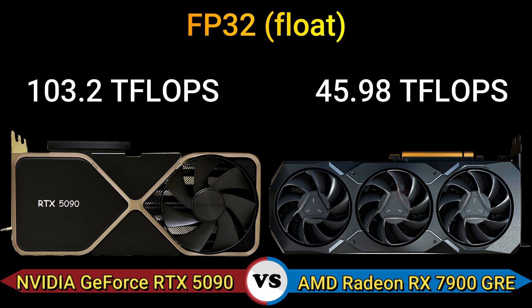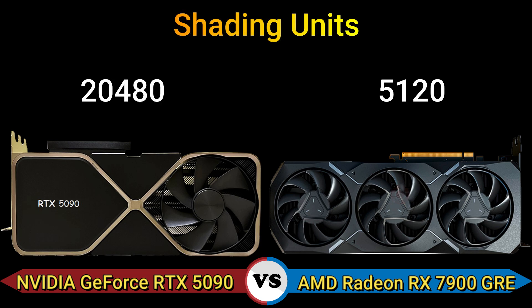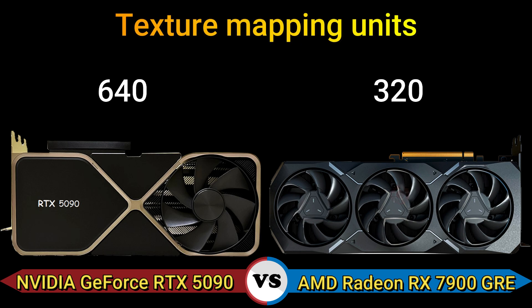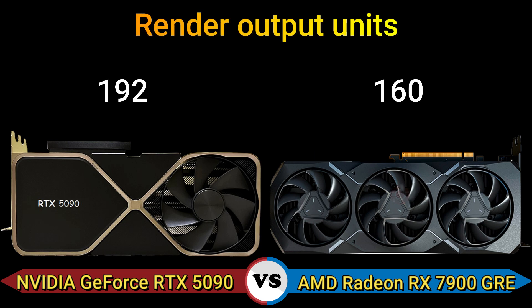FP32 float: 103.2 TFLOPS and 45.98 TFLOPS. Shading units: 20,480 and 5,120. Texture mapping units: 640 and 320. Render output units: 192 and 160.